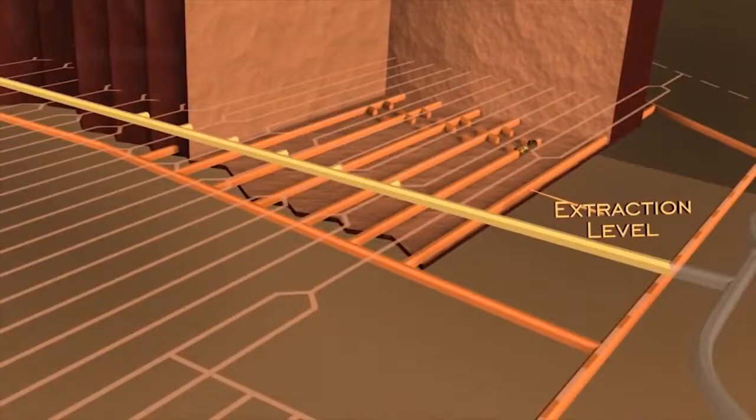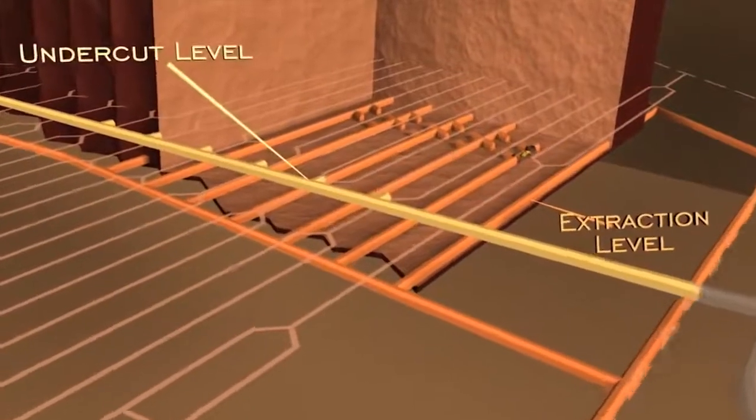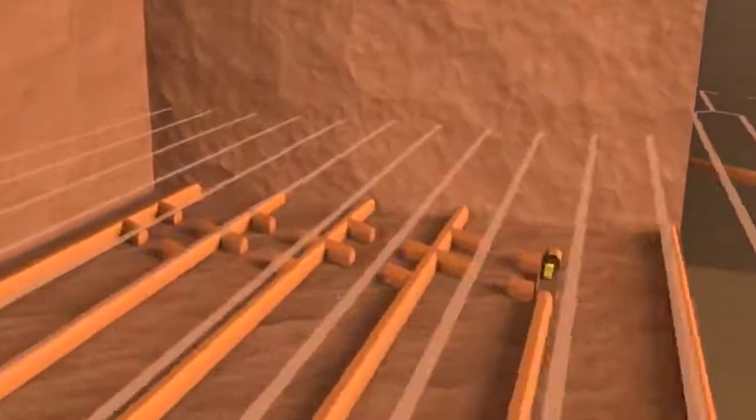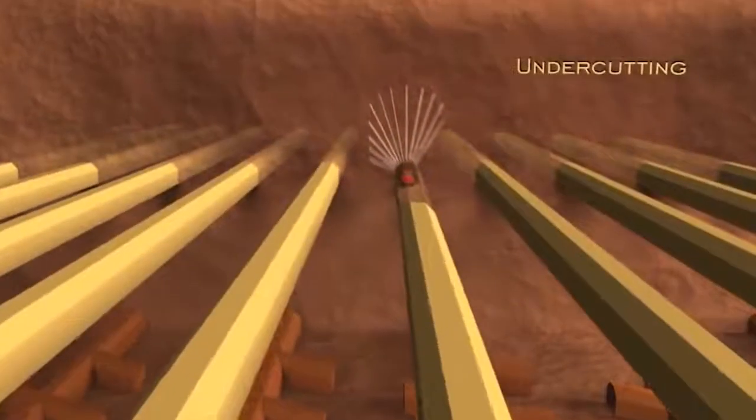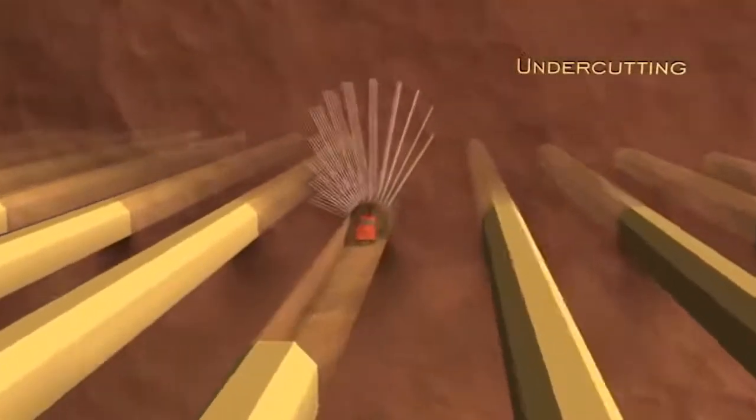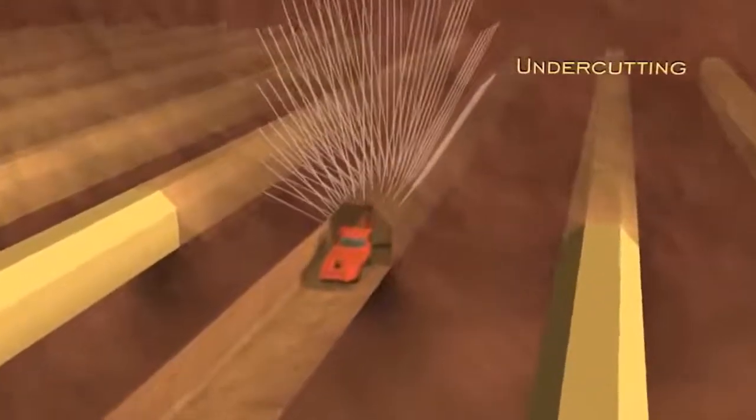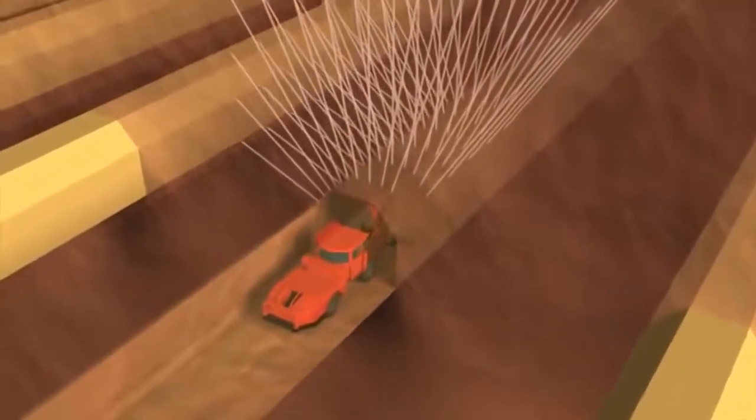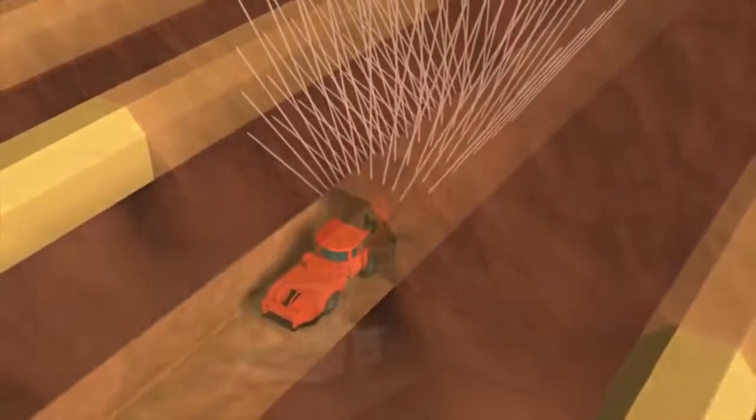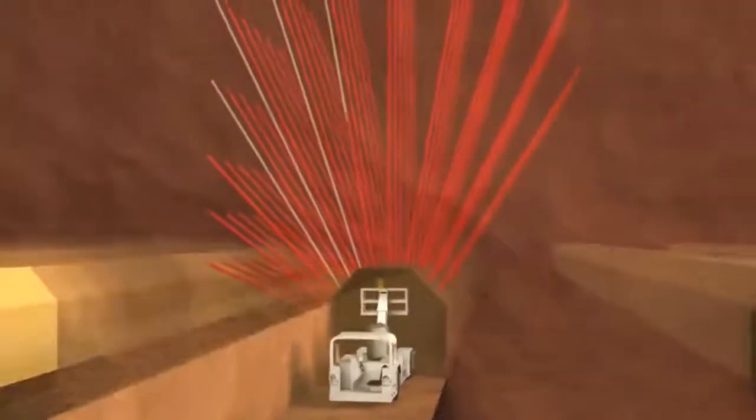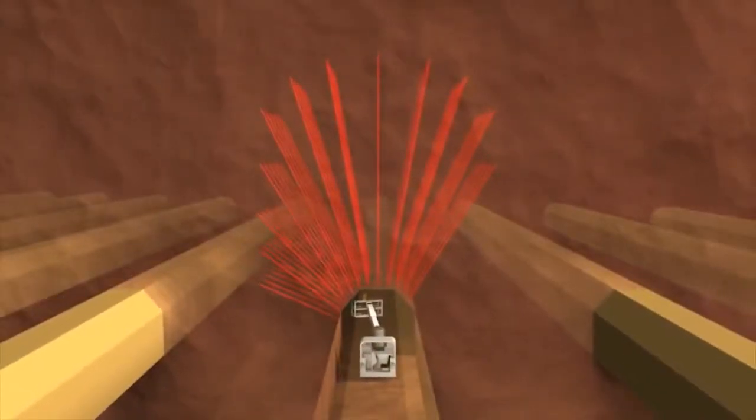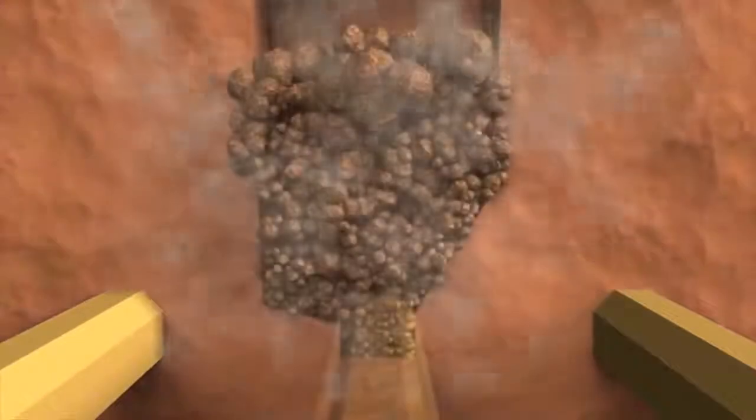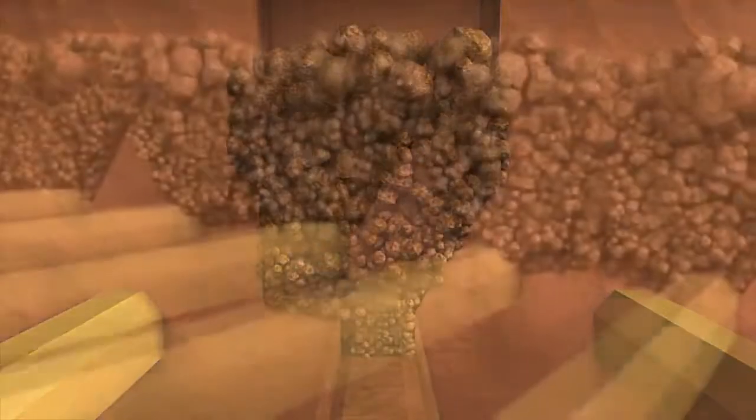We move up 20 meters to the undercut level. Here, we see advanced drilling and blasting to undercut the ore body. This undercutting will allow the ore to cave under its own weight.